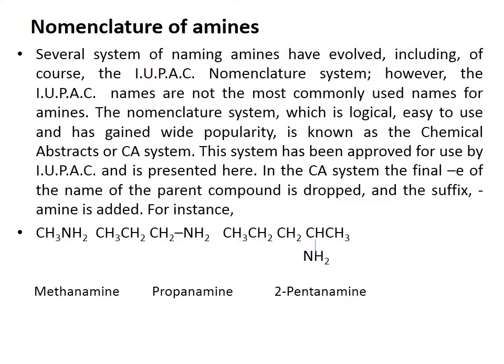Nomenclature of amines refers to the naming of amines — how amines are named. We have several systems of naming amines, including the IUPAC nomenclature system. For example, the first name is methanamine, having an alkyl compound with NH2 — that is, an amine group. The second one is propanamine, having three carbons and eight hydrogens with an attached amine group. The third is 2-pentanamine, having the compound distributed accordingly.